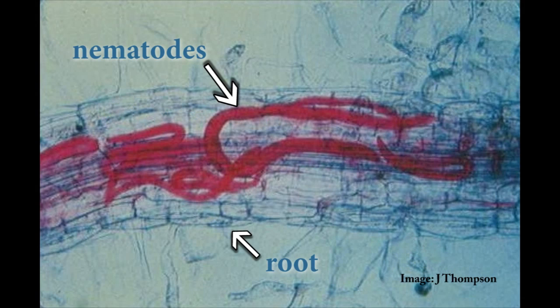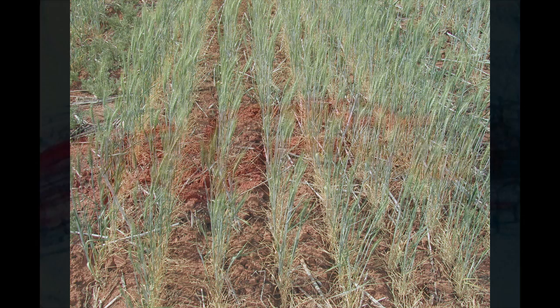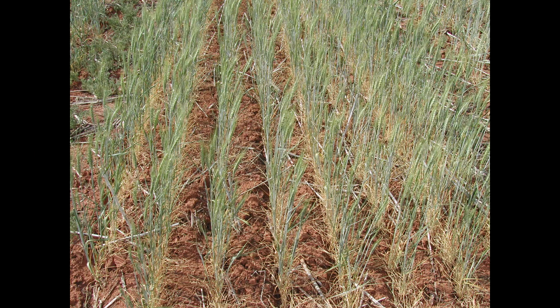Nematodes invade the roots of growing plants. When nematode numbers are high, this can cause damage to the roots and affect nutrient and moisture uptake. Crops with damaged root systems can suffer nutrient deficiencies and become quickly moisture stressed as soil moisture becomes limiting. This often occurs towards the end of the growing season or in dry years.